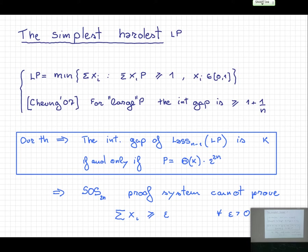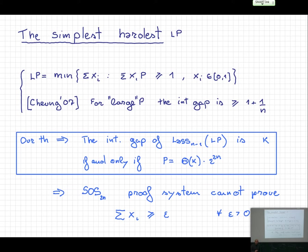The simplest hardest problem for Lasserre is what is called the mean knapsack problem. As shown by Cheung in 2007, it is defined as follows: you have the sum of x_i times a parameter p — an integer value — that must be greater or equal to one, with x_i being zero-one variables, and you want to minimize the sum of variables. Cheung proved that for large p, the integrality gap is vanishing with n. But using the sufficient and necessary condition I showed, you can prove something much stronger: the integrality gap of this mean knapsack is unbounded. For any n, it suffices to set p sufficiently large to get an unbounded integrality gap.